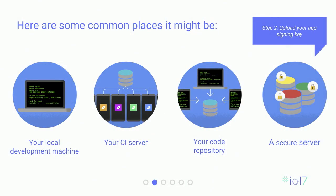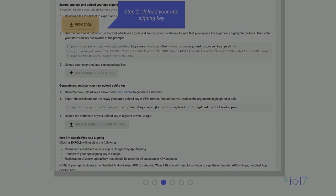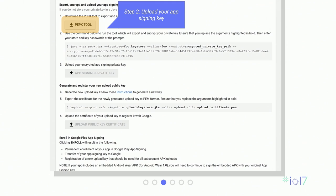Next, you've got to find your current keystore file. Here are some of the common places that developers have told us they keep their key: your local development machine, your CI server, your code repository, or maybe even a secure server. Then you're going to download our tool to encrypt your app signing key. This tool uses Google's public key to encrypt your key prior to network transfer. If you want to inspect the source code for this tool, you can.